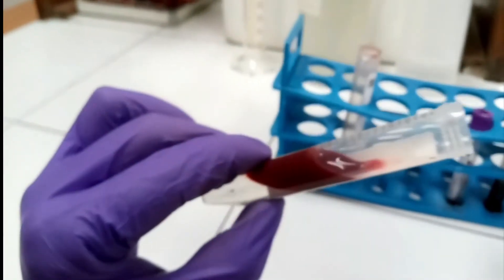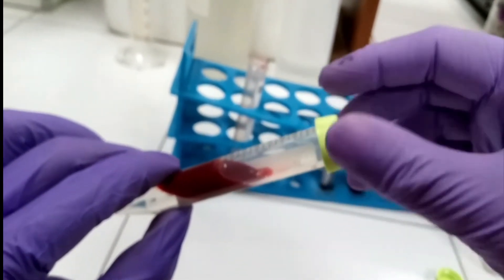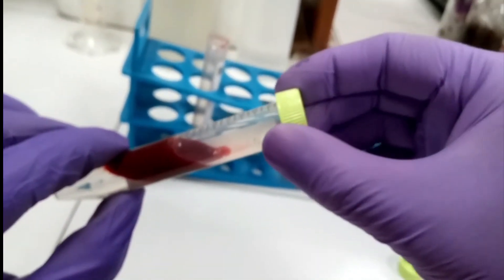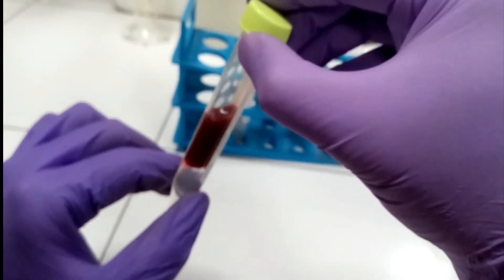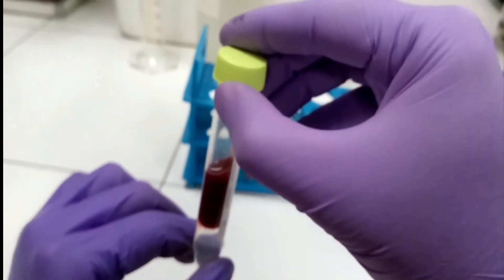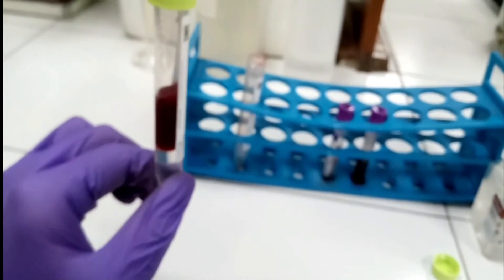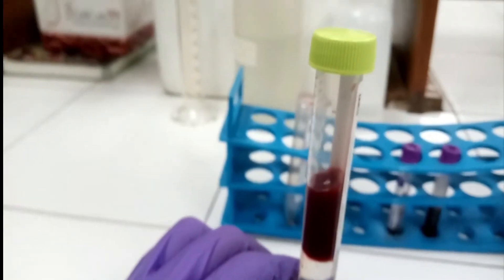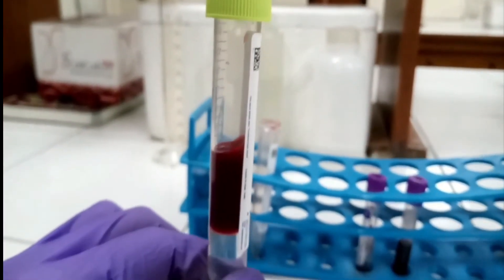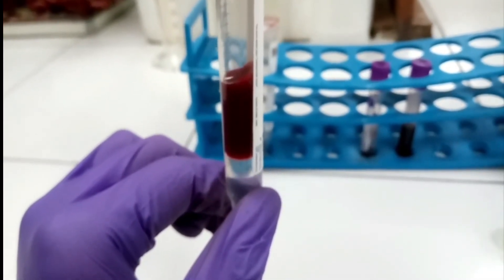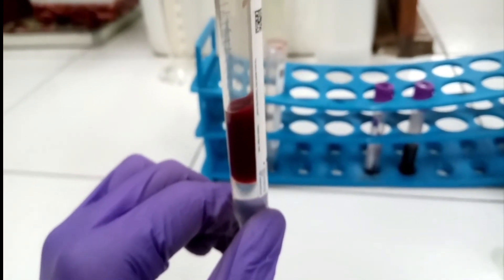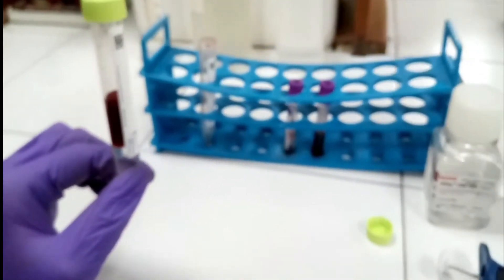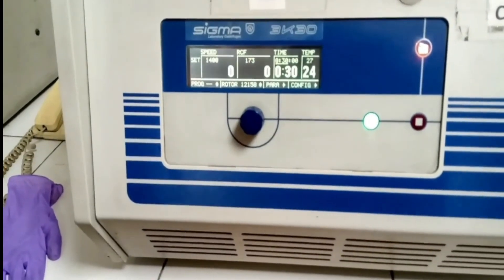Now the process of addition is complete. Since we have to centrifuge the tube, we need to make it vertical, so extreme carefulness is required. We have to slowly change the angle of the falcon so the blood doesn't mix. As you can see, I've very slowly moved the angle of the falcon. You can see that on the below portion there's only Ficoll, and blood has formed a clear layer above Ficoll with no mixing. Now we'll centrifuge this at 1400 rpm for 30 minutes at room temperature.